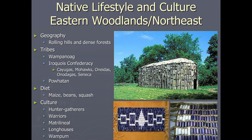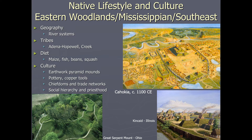The first native lifestyle is the Eastern Woodlands and the Northeast, which correlates with Chapter One of the textbook. The geography features rolling hills and dense forests. The Wampanoag and the Iroquois Confederacy make up the main tribes. When the Puritans came to America, they encountered these tribes. In the French and Indian War, the British formed an alliance with the Iroquois Confederacy. In Virginia, they encountered the Powhatan tribe. Their diet consisted mainly of maize — corn, beans, and squash — and their culture included hunters and gatherers, warriors, and matrilineal households living in longhouses. Some Eastern Woodlands societies lived along the Mississippi River and its river systems.